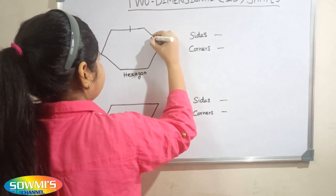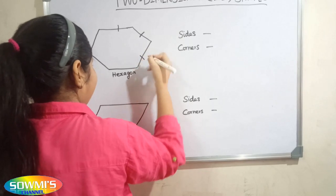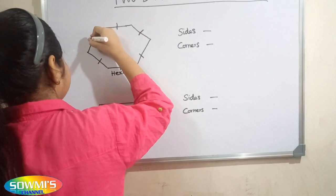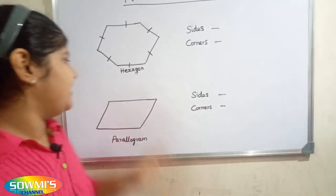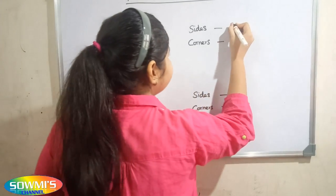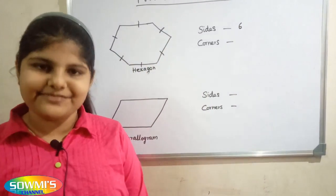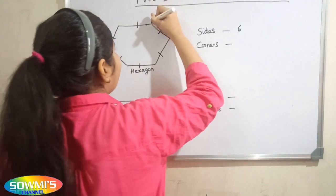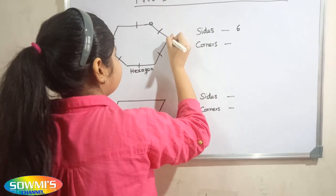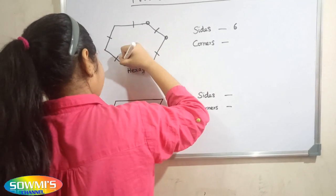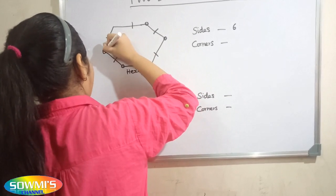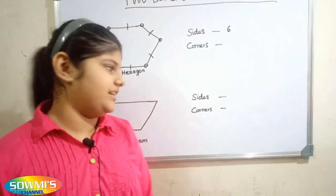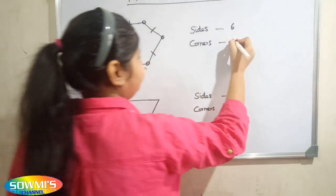Counting the sides of the hexagon: 1, 2, 3, 4, 5, 6 — there are six sides in a hexagon. Next we will count the corners of the hexagon — there are six corners in a hexagon.